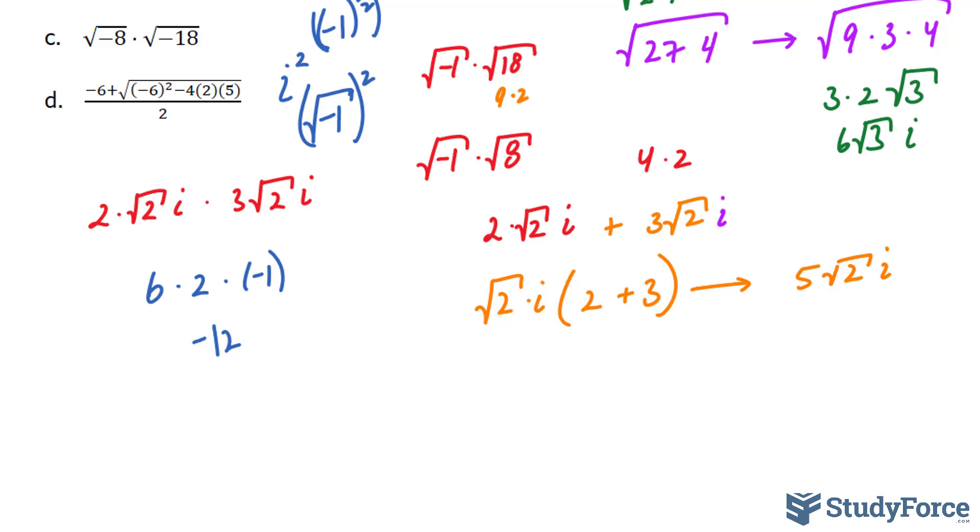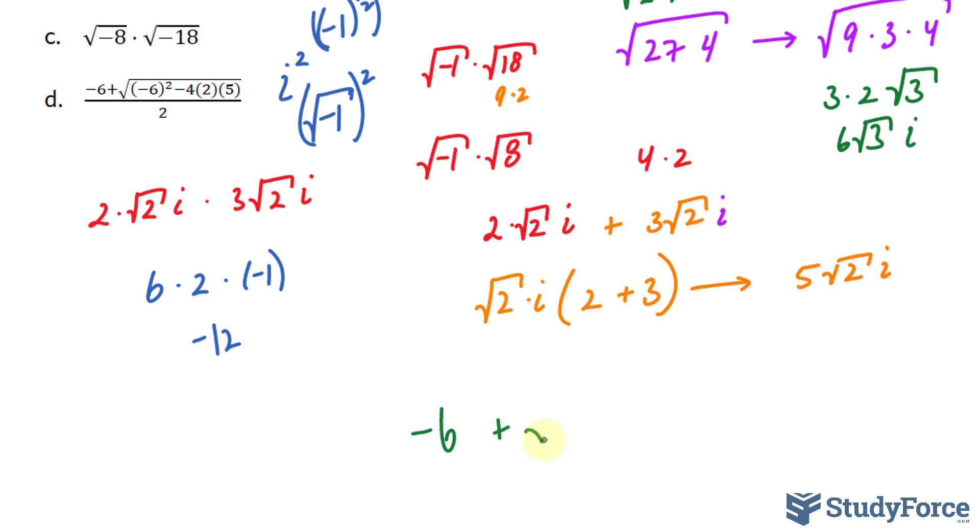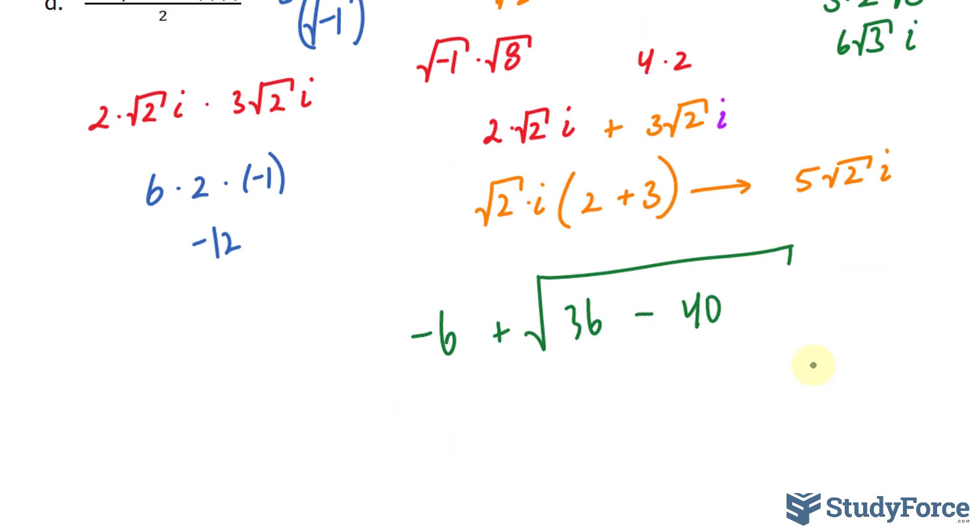Finally, in question D, it looks like the quadratic formula, but it's not, of course. We have negative 6 plus the square root. Negative 6 raised to the power of 2 is 36. And multiplying these three numbers out, we get minus 40. At the bottom, we have 2. 36 minus 40 is negative 4.